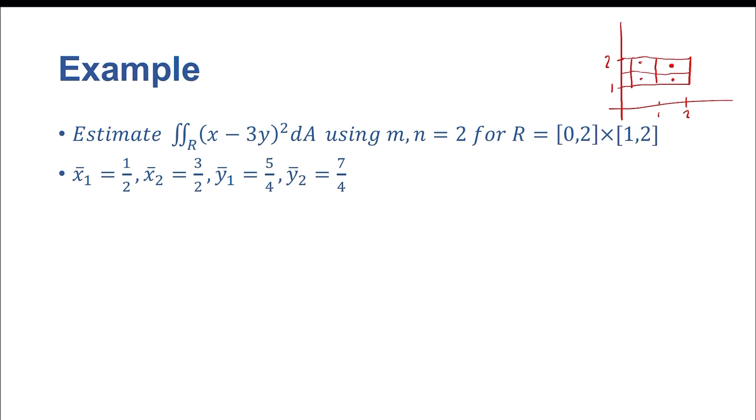So we've got to find the midpoints. So for the first one, we get x bar sub 1 equals 1 half. And then x bar sub 2 equals 3 halves. Because this is going to be 1 half. This is going to be 3 halves. Then we do y bar sub 1 is equal to 5 fourths, which is going to be here. And then y bar sub 2 is going to be here at 7 fourths.